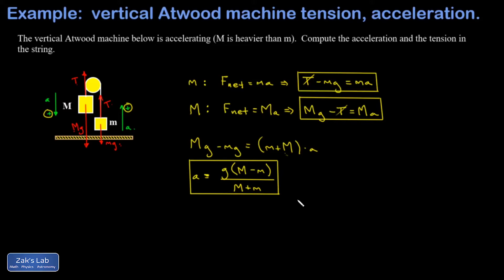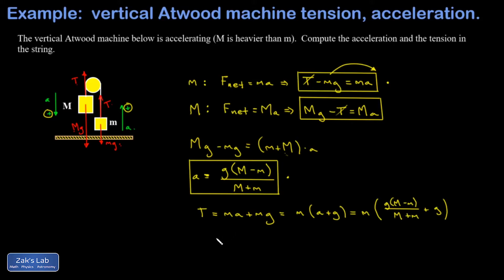Now, how do we get T? We go back to the first equation and replace a with the value we just found, then simplify. Adding mg to both sides: T equals ma plus mg, or T equals m times the quantity (a plus g). Substituting the expression for a and pulling out g, we get little mg times the quantity [(M minus m)/(M plus m) plus 1], converting that 1 to a common denominator of (M plus m)/(M plus m).